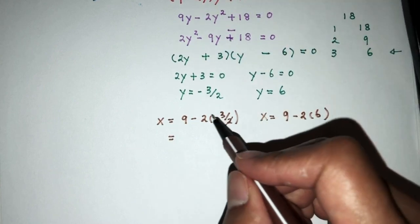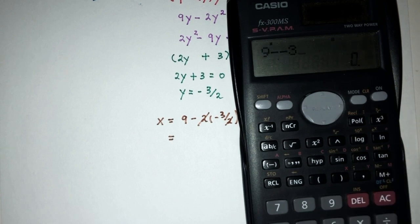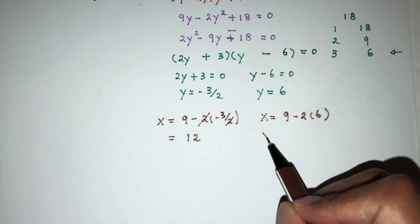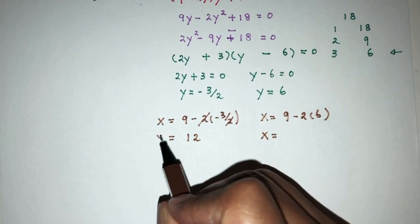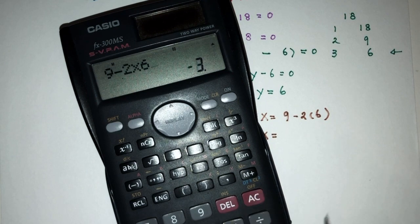So, here this will go away cancel out. Here we have 9 minus minus 3 that will be 12. And here we have x is equal to 9 minus 2 times 6 that will be minus 3.